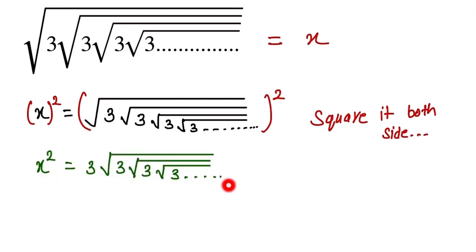So here, this one is x², and this part we already let equal to x. So x² is equal to 3, and this one is x, so into x.